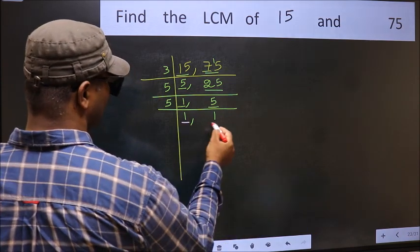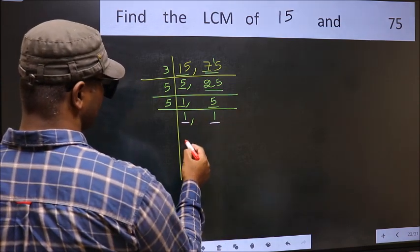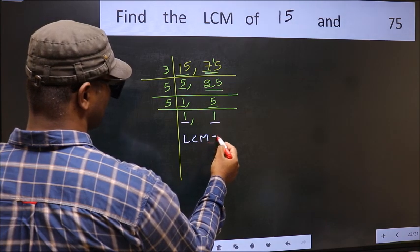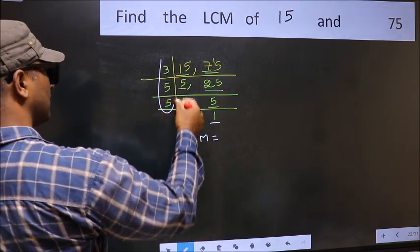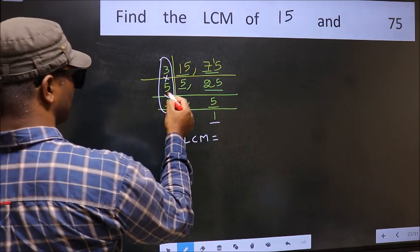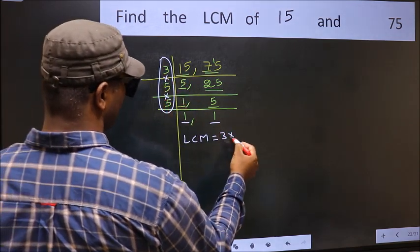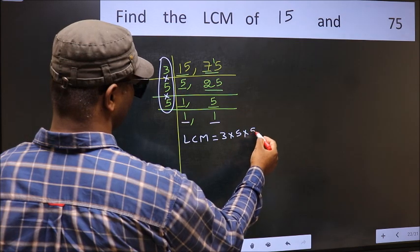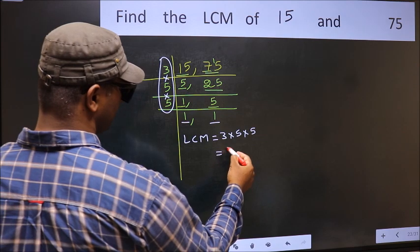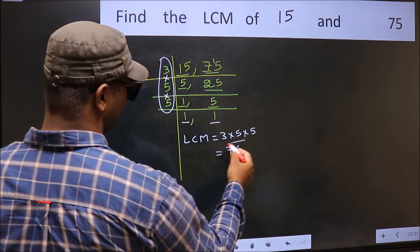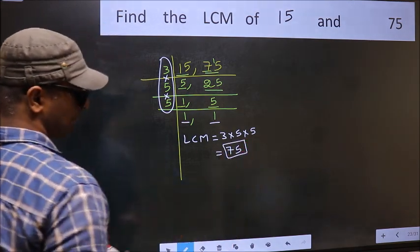We got 1 in both places. So our LCM is the product of these numbers: 3 into 5 into 5. When we multiply these numbers, we get 75 as our LCM.